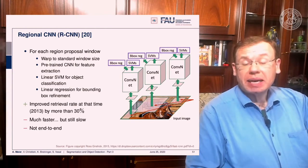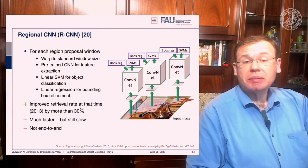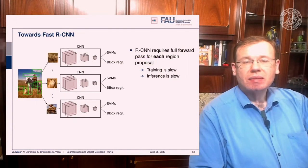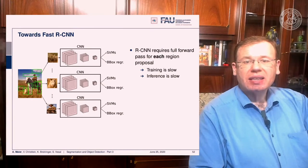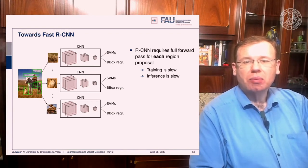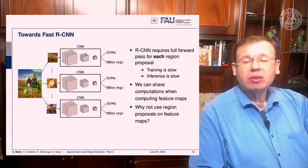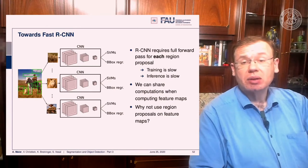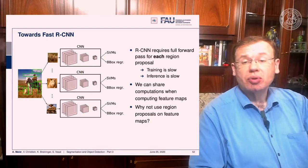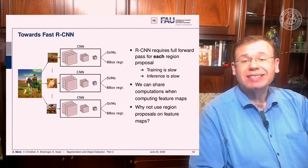This was better than previous methods at the time in 2013, but it is still slow and not end-to-end. RCNN still requires a full forward pass for each region proposal, making both training and inference slow. We can share computations when computing feature maps, since similar computations are repeated, and the key idea to improve inference speed is to apply region proposals on the feature maps rather than the raw image.